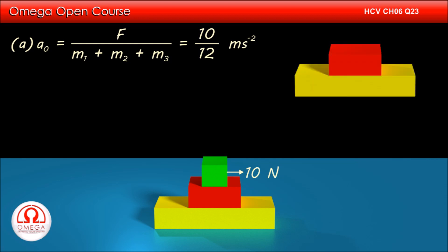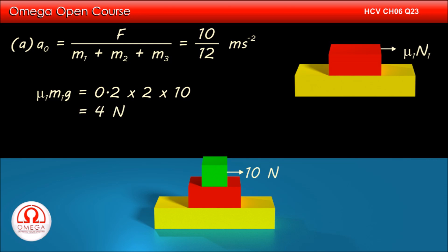If we take M2 and M3 as a single system, then the mass of the system is 10 kg and the only horizontal force acting on the system is friction between M1 and M2. The maximum possible magnitude of this friction is mu1 times M1 times g, or 0.2 × 2 × 10, i.e. 4N. Therefore, the maximum possible acceleration of the system comprising M2 and M3 is equal to 4 by 10, or 0.4 meters per second square.